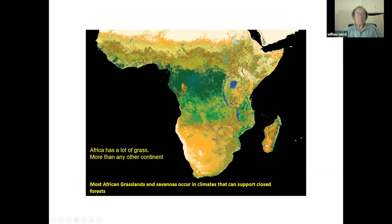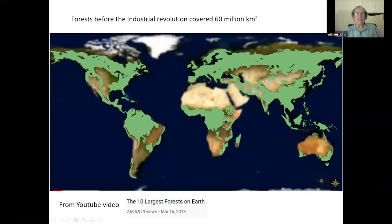Interestingly, Madagascar is rather similar — also a very grassy island. But it wasn't always this way, according to another story: the deforestation story.